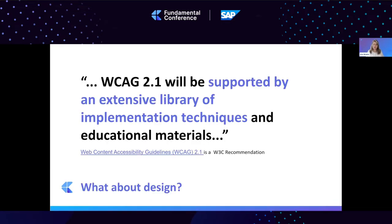I'd like to start with a specific quote: WCAG 2.1 supports accessibility through an extensive library of implementation techniques and educational material. However, there is a strong focus on implementation and code, so designers are left to interpret the content in order to work with the recommendations during the design phases. There is a lot of interpretation required for designers to understand what should be done.